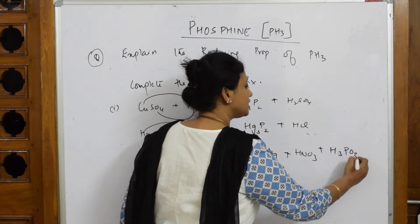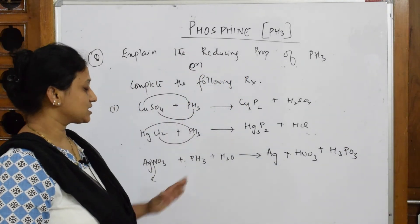The oxoacid of phosphorus, hypophosphorus acid. So it's going to form these three compounds.